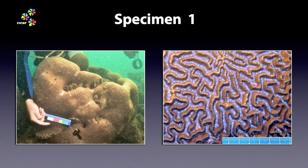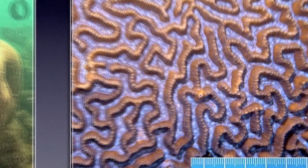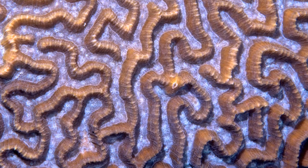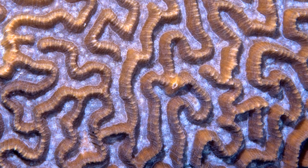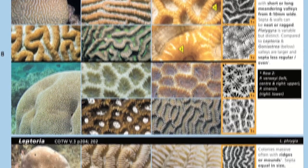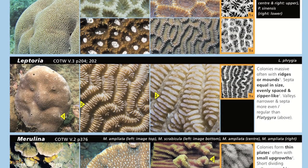Remember, the Coral Finder summarises the variation of all the species contained by a genus. The important thing is to confirm the distinctive characters. Our long valley Platygyra not only has larger valleys, but also ragged-edged scepter, which separates it from the evenly spaced, zipper-like scepter of the other long valley genus, Leptoria.